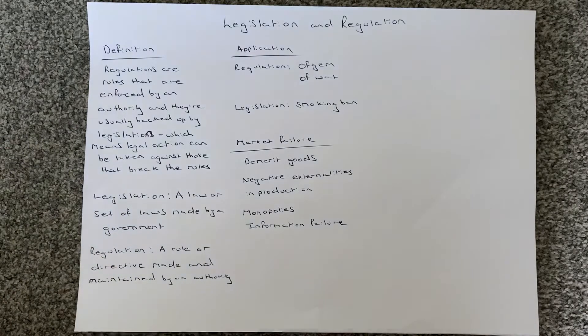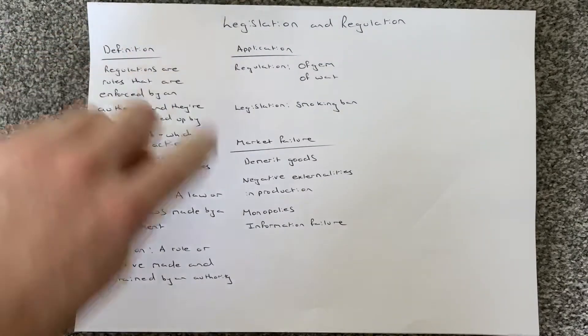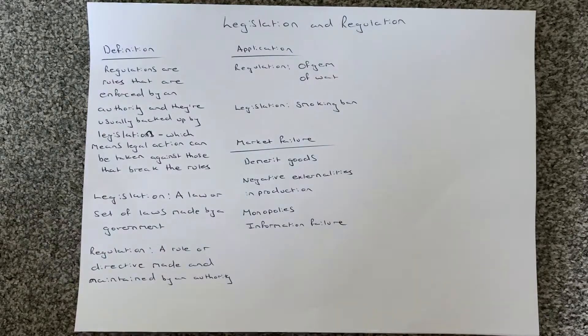We have some particular examples. Legislation and regulation are used to correct the market failure associated with demerit goods, negative externalities in production, monopolies, and information failure.